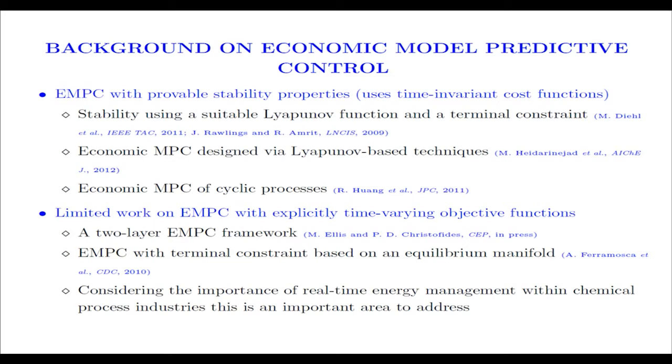A lot of work has been done recently on EMPC, but mainly with time invariant cost functions. There has been a limited amount of work on explicitly time varying objective functions, mainly within the context of a two-layer EMPC structure as well as an EMPC structure with a terminal constraint on the basis of an equilibrium manifold. However, as the economics change on a comparable time scale as the process dynamics, there is no reason for economic operation or the optimal trajectory to be anywhere near some equilibrium manifold. Considering the importance of real time energy management, it's important to consider an EMPC formulated on the basis of a time-varying economic objective function.